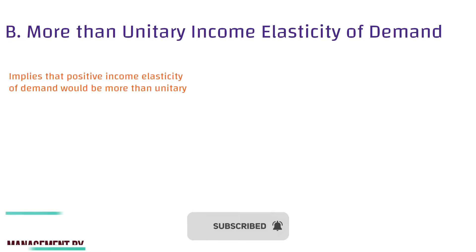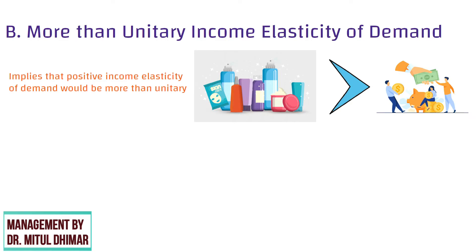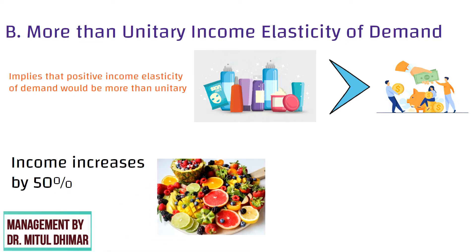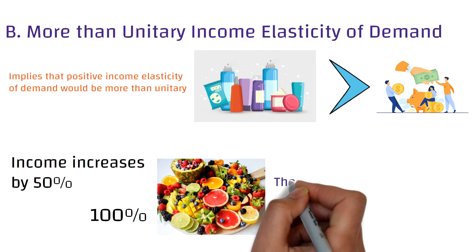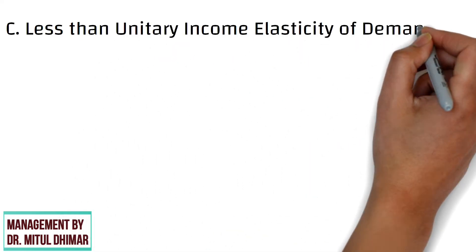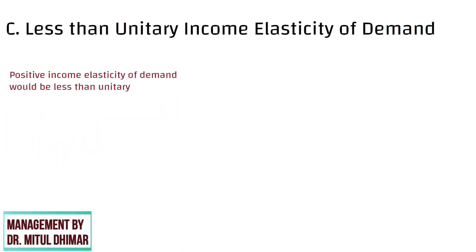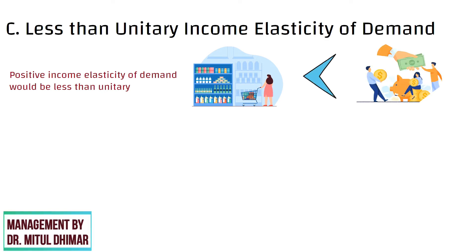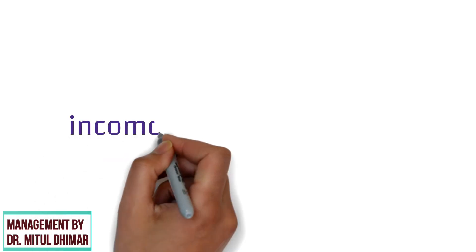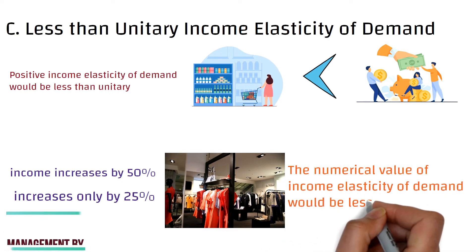Positive income elasticity of demand would be more than unitary when the proportionate change in the quantity demanded is more than the proportionate change in income. For example, if the consumer income increases by 50% and the demand of fruits rises by 100%. Income elasticity of demand would be less than unitary when the proportionate change in the quantity demanded is less than the proportionate change in income. For example, if the income increases by 50% and the demand of clothes increases only by 25%, the numerical value of income elasticity of demand would be less than 1.